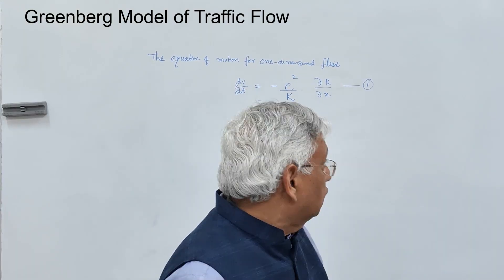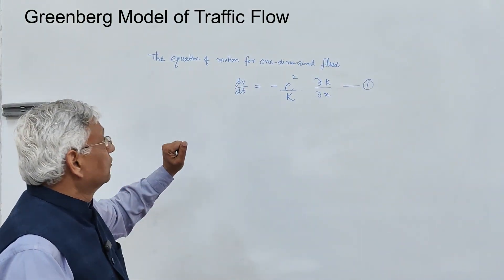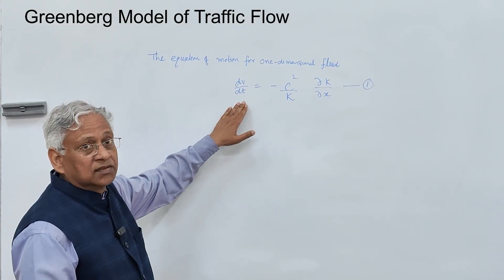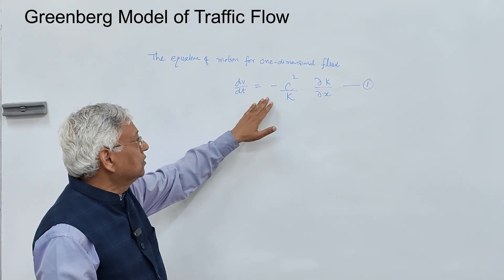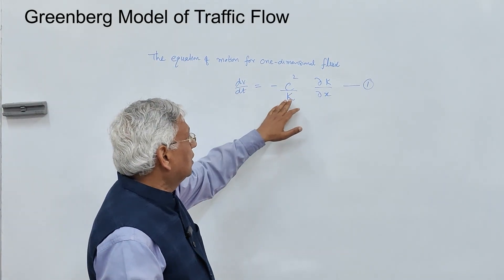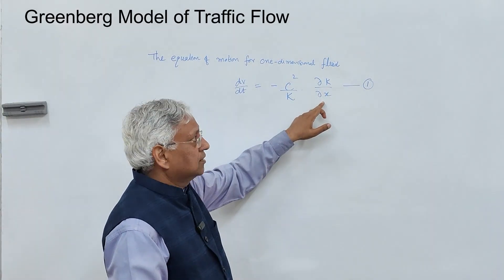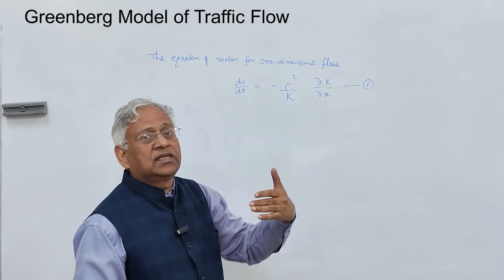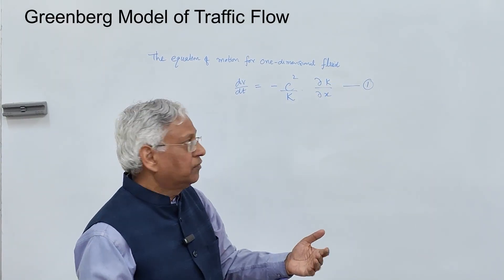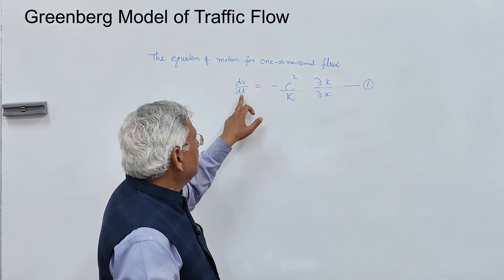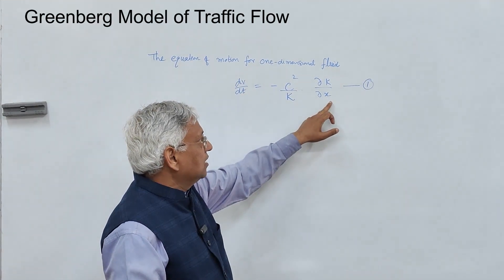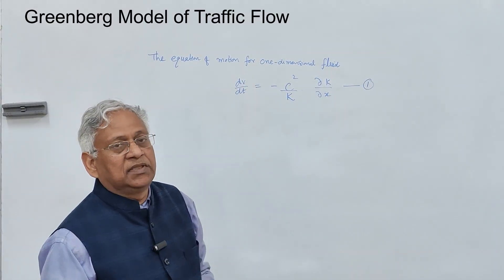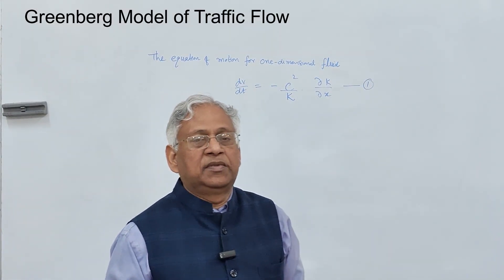The equation of motion for one-dimensional fluid is: dV/dt is equal to minus c-squared upon k into del-k upon del-x. Here, k is concentration — which we call density in traffic flow — t is the time to travel distance x, c is a constant, and v is the space mean speed.